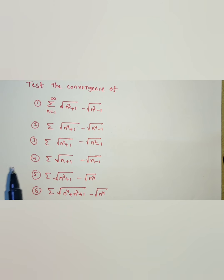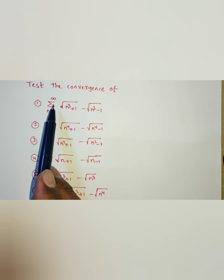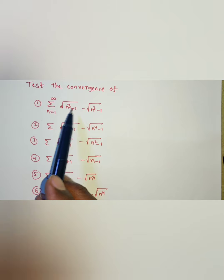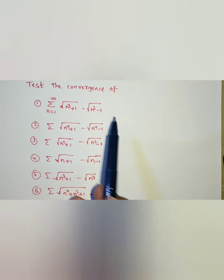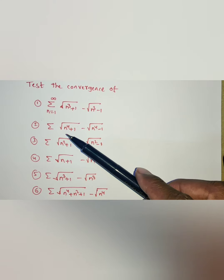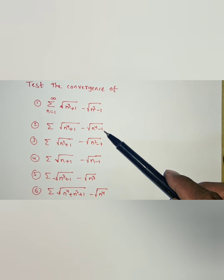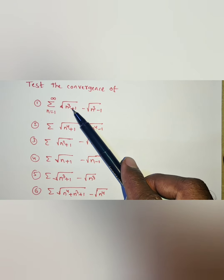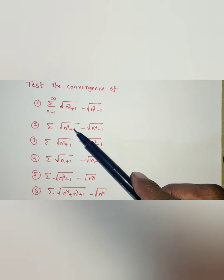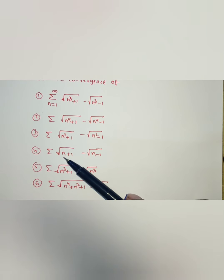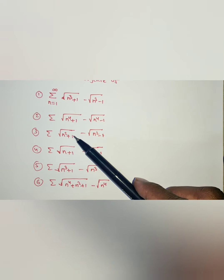In this video, we are discussing how to test the convergence of summation n equals 1 to infinity of square root of n cubed plus 1 minus square root of n cubed minus 1. Similarly, square root of n to the power 4 plus 1 minus square root of n to the power 4 minus 1. Here you have n power 3 plus 1, here n power 4 plus 1, next n squared plus 1, next n power 1 plus 1. So, only the powers change in this case.